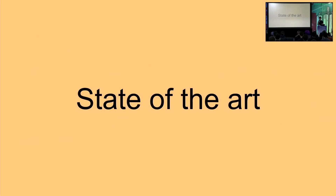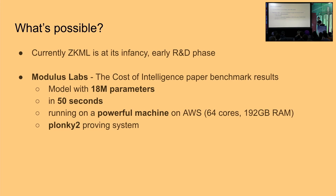Now I'll talk about the current state of the art of what we're able to do with zero-knowledge machine learning. ZKML is at its infancy — ZK proving systems have only recently become mature enough that people have started creating proofs of computationally intensive operations like machine learning models. It's in a very early R&D phase, with a bunch of papers in the past few years and a few tools with better ZK proving systems and easier APIs that let you create proofs of more complex operations.